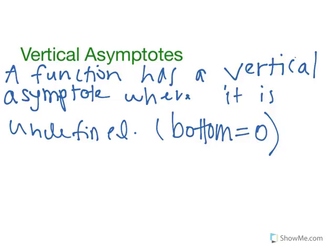We also have vertical asymptotes. A function has a vertical asymptote where it is undefined, and that's where the bottom or the denominator equals 0.